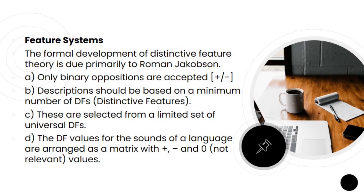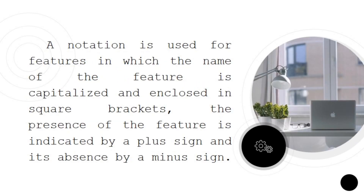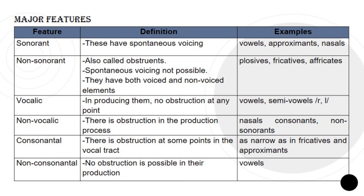An alternate way to analyze sounds makes use of the concept of binary or paired features, where there is an opposition between the presence or absence of a feature in a particular sound. A notation is used for features in which the name of the feature is capitalized and enclosed in square brackets. The presence of the feature is indicated by a plus sign and its absence by a minus sign. The following table shows the major features: the first column lists the features, the second column definitions, and the third column examples.